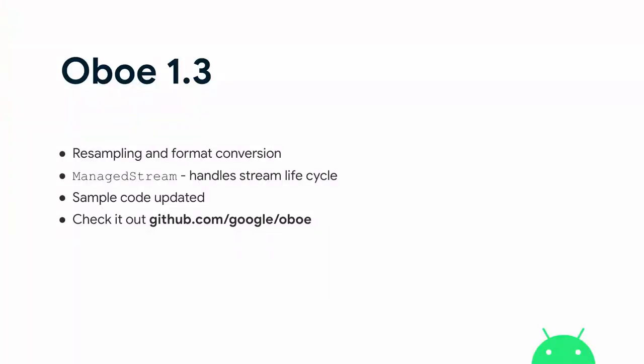In summary for Oboe 1.3: we've added resampling and format conversion, the managed stream which makes it easier to handle stream lifecycles, and we've updated all the sample code. Oboe is open source and we're taking pull requests, so if there are any issues we can fix them in the open.